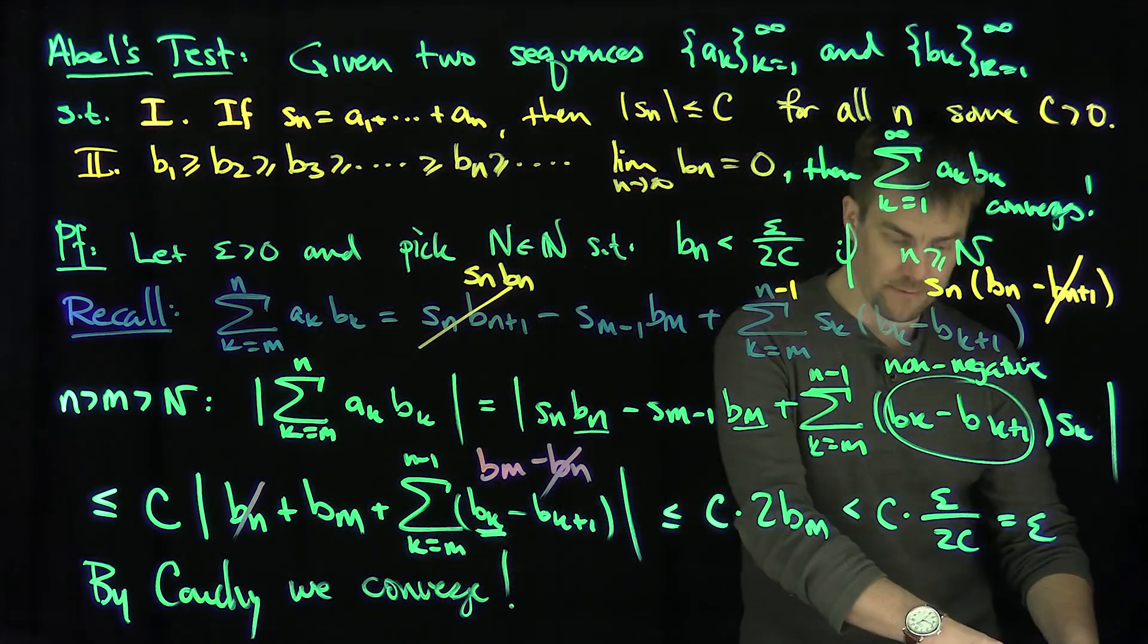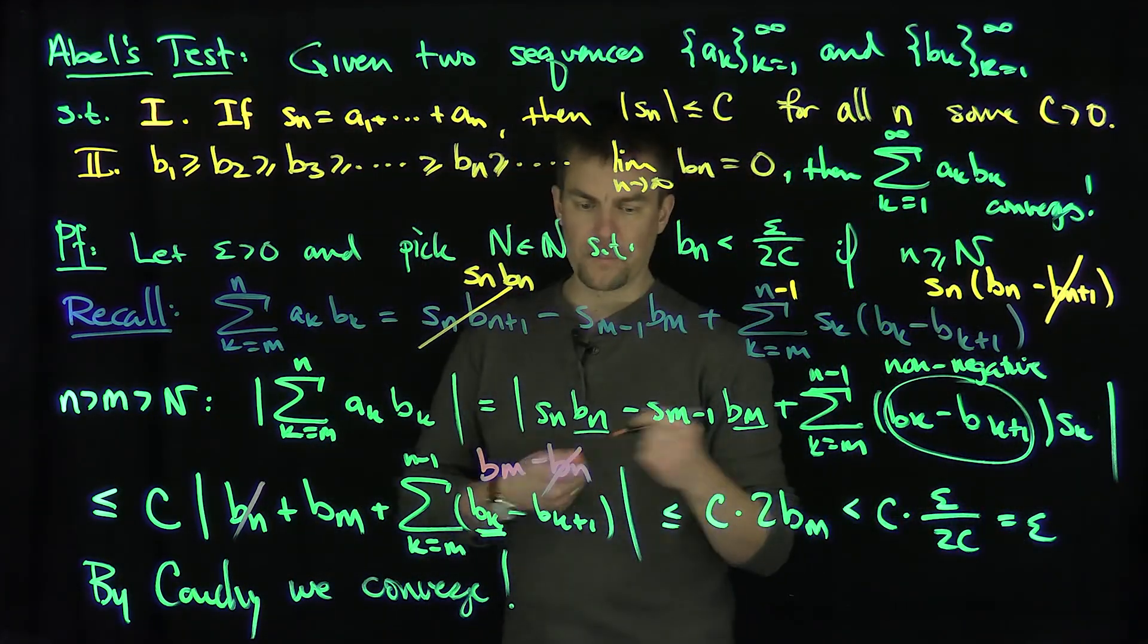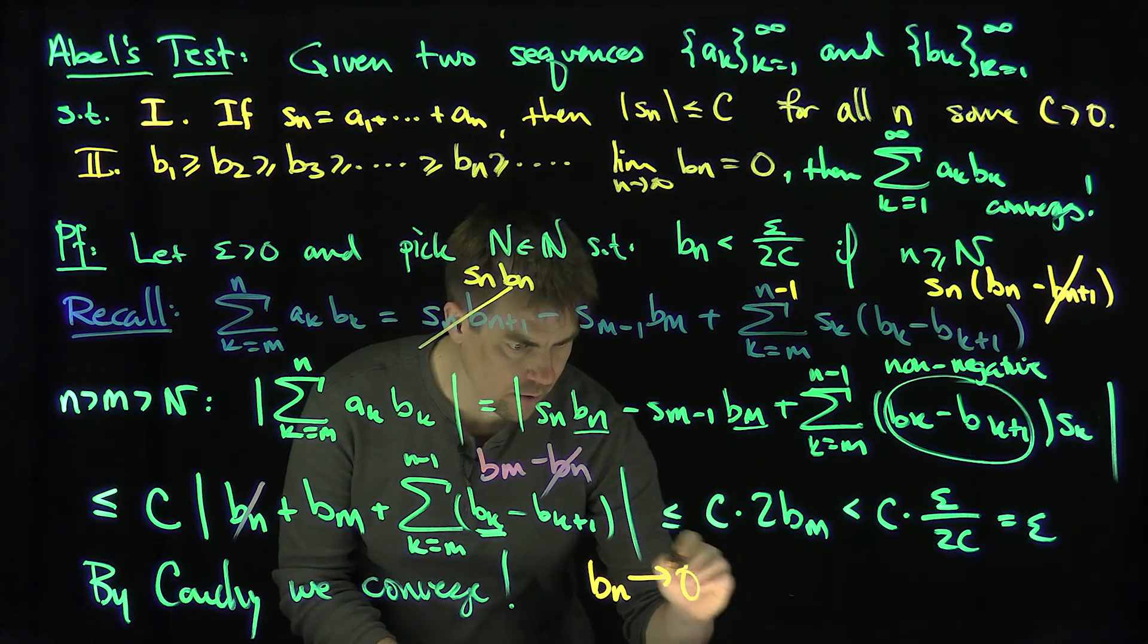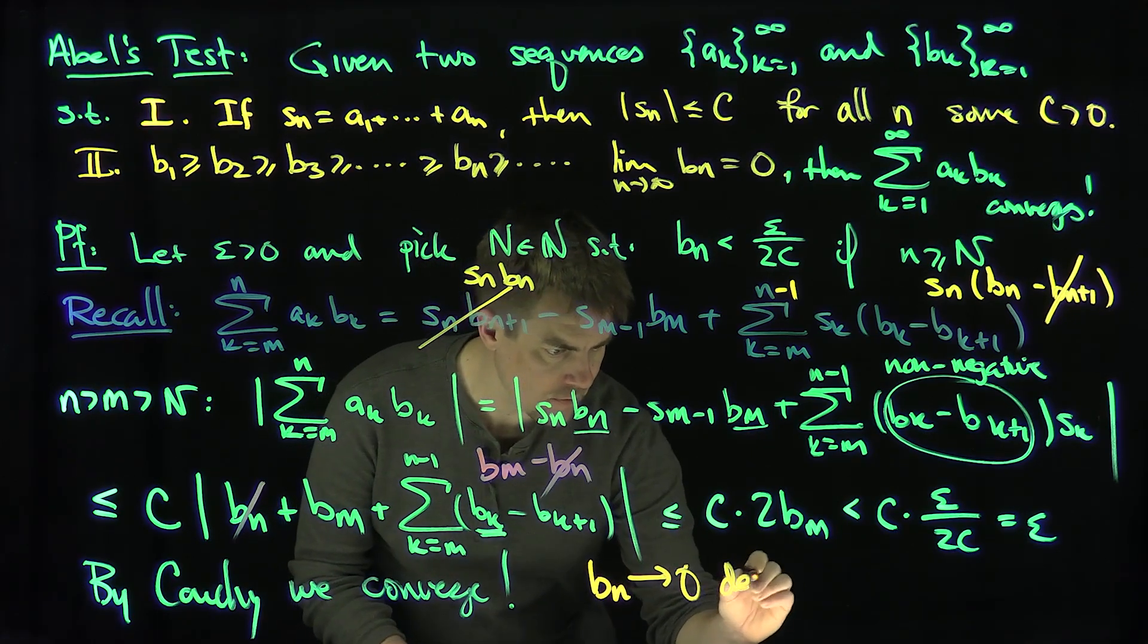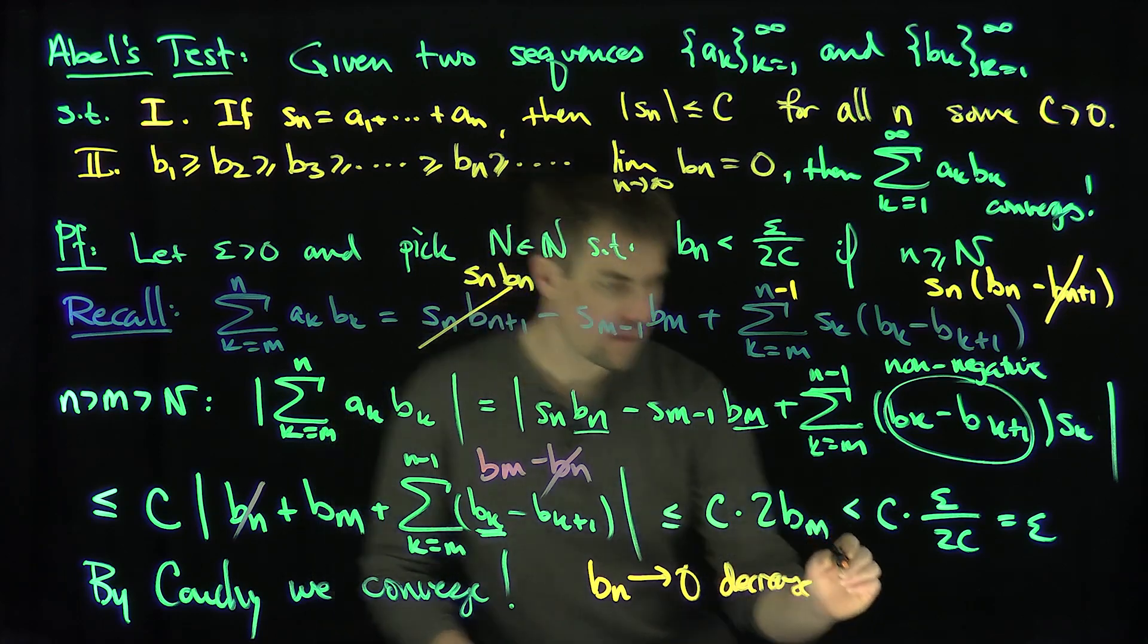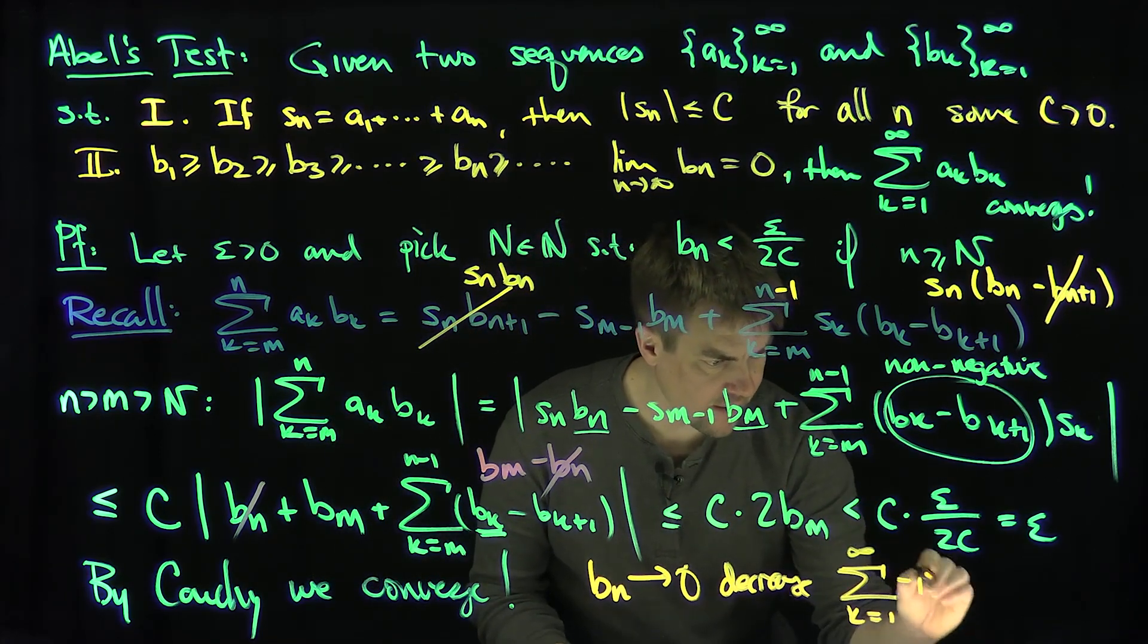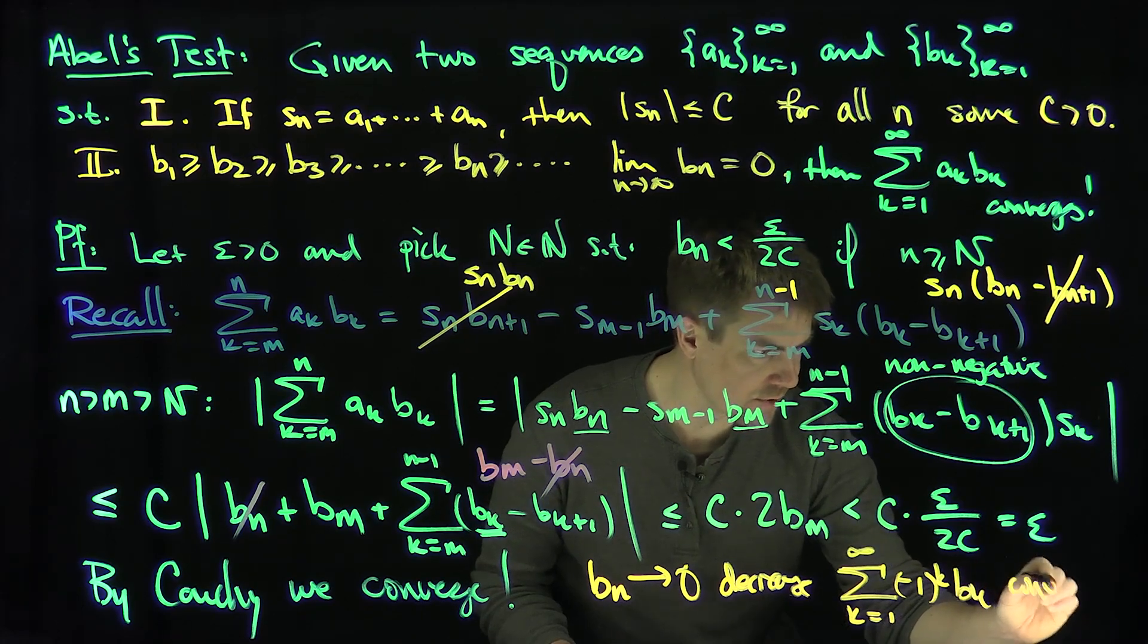Now, the immediate application of this is the following. One automatic thing is that if the b_n decrease to 0 and they decrease, then the sum k goes from 1 to infinity of (-1)^k b_k converges.